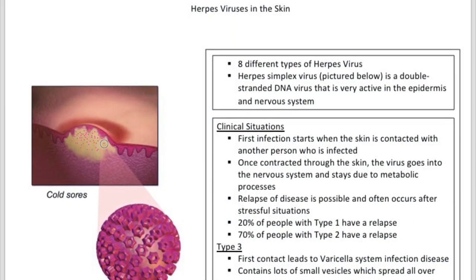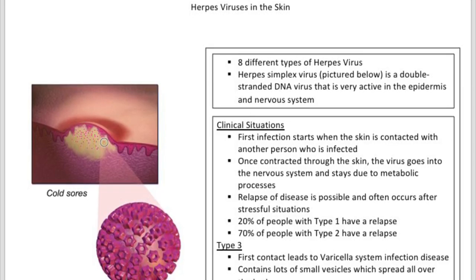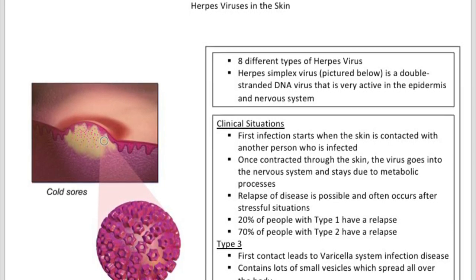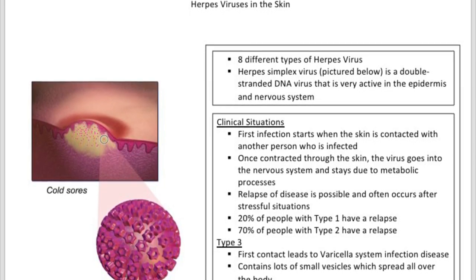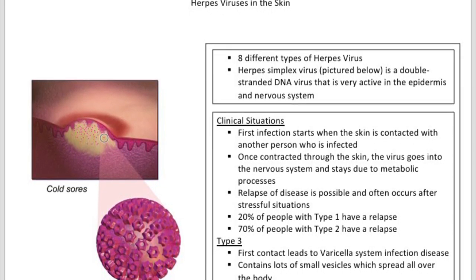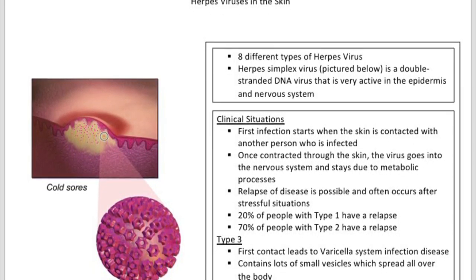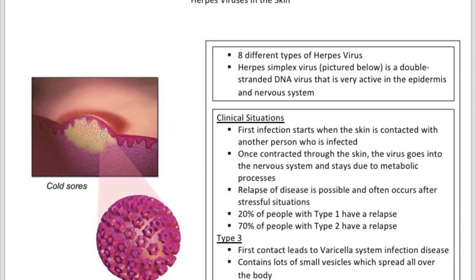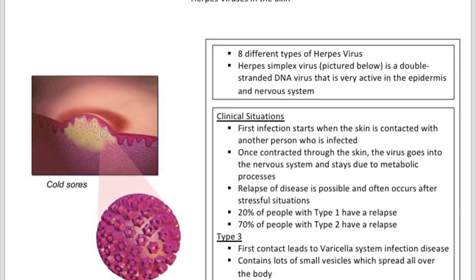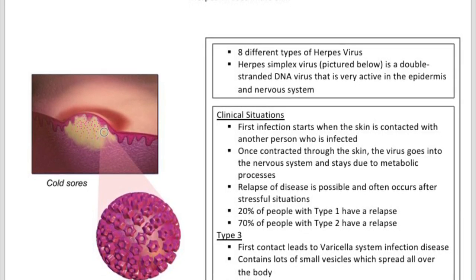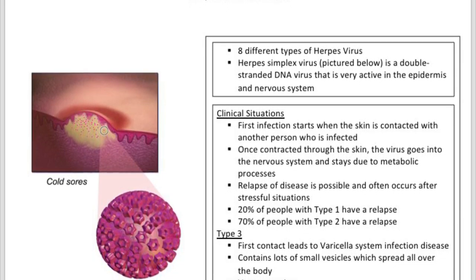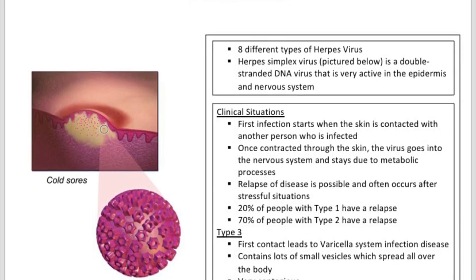For this lesson in unit five, we're going to talk about herpes viruses in the skin. There are eight different types of herpes virus. Herpes simplex virus is a double-stranded DNA virus that is very active in the epidermis and nervous system.